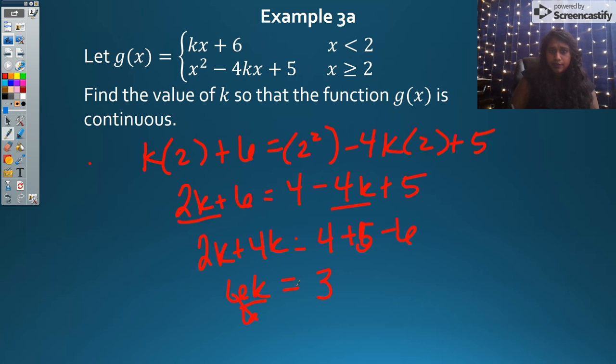Divide by 6, and K equals 1/2. A self-check would just be plugging in to find out if that worked. So 1/2 x plus 6 and x² - 4(1/2)(2x) + 5. If you plug in 2 here, you get 6. If you plug in here 2, that becomes 4 - 4 + 5. Uh-oh, something funky happened.